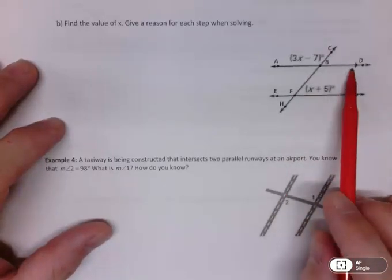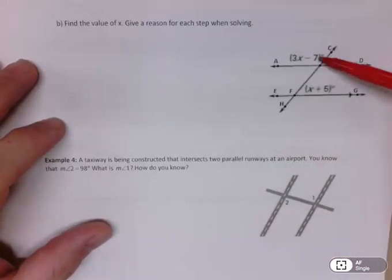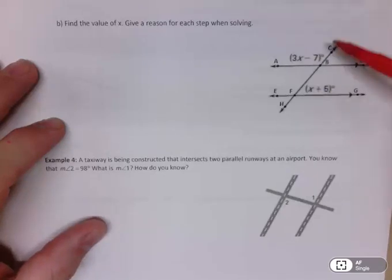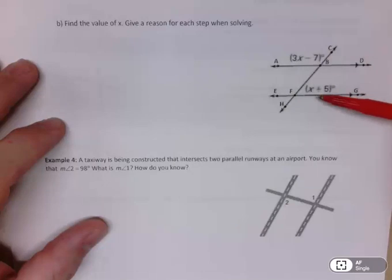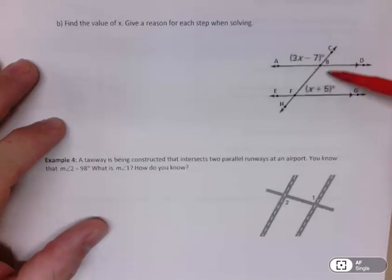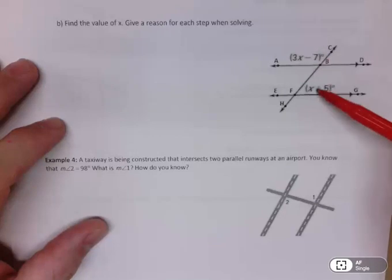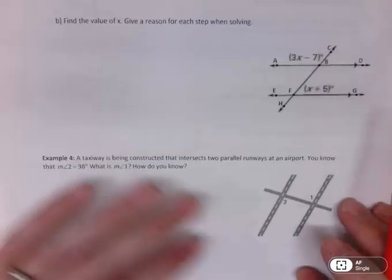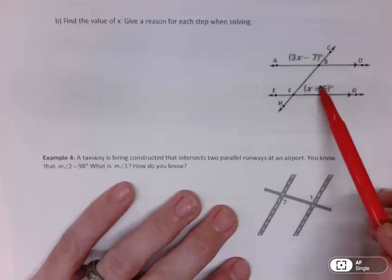The first thing is, for this one, while you've got the parallel lines, those two angles do not fit any of the pairs that we talked about. They're not corresponding, they're not alternate interior, they're not alternate exterior, they're not consecutive interior, they're not a linear pair, they're not vertical angles. There's no special name for those two.